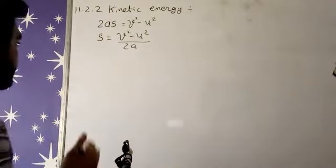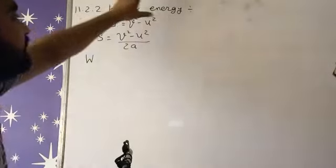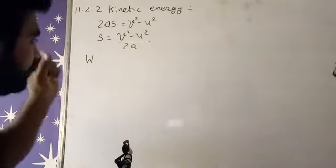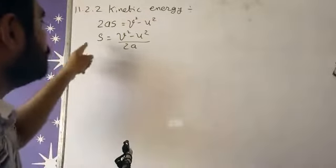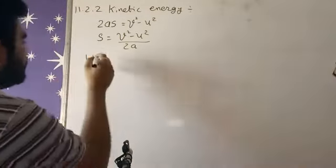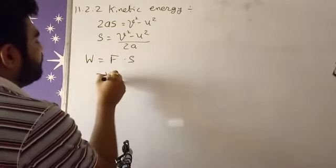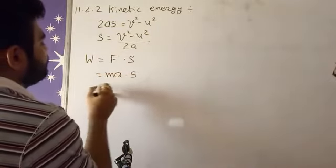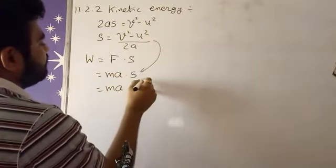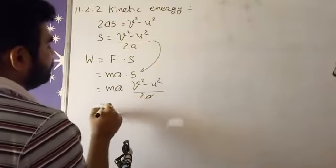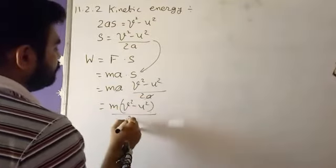Now writing the work formula. Because with this energy the object is in motion, and because of that motion the object can do work. Work formula is W = F × S. We know that force formula is mass × acceleration, so substituting S = (v² minus u²) upon 2A, the acceleration A gets cancelled out. So we are left with W = m(v² minus u²) upon 2.